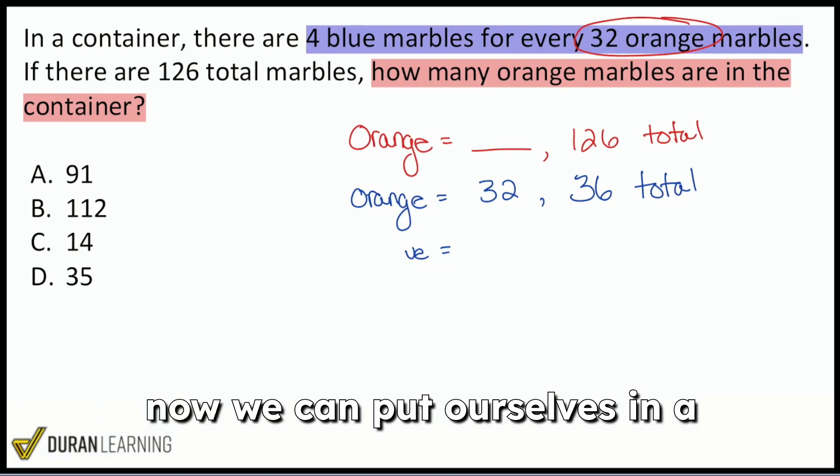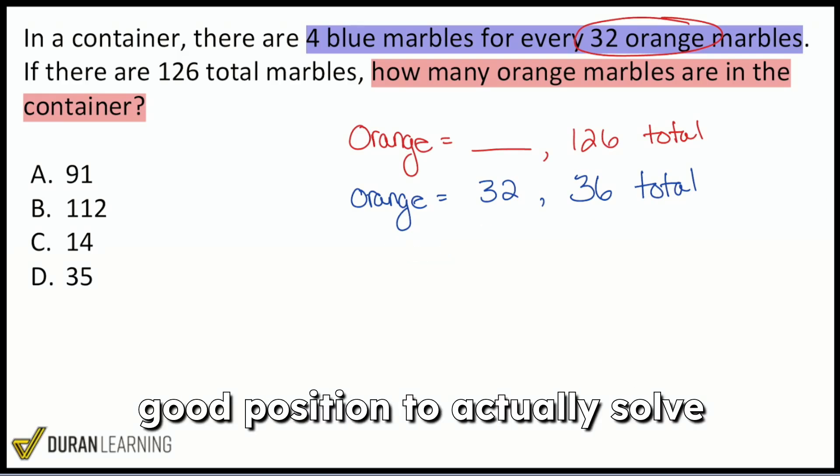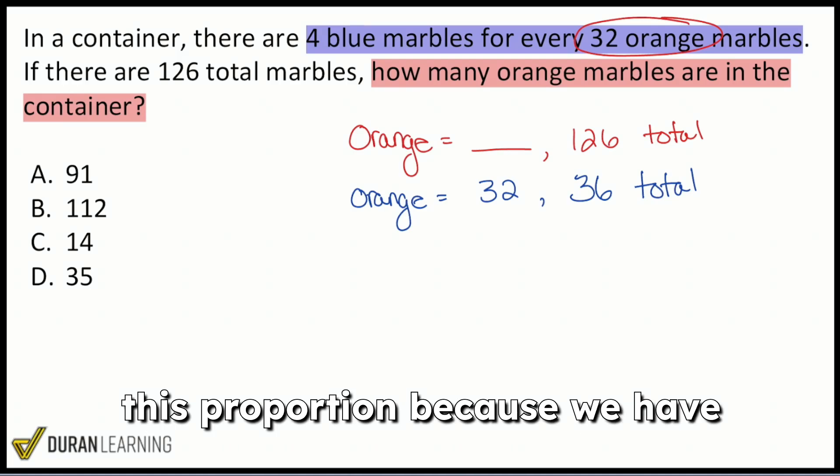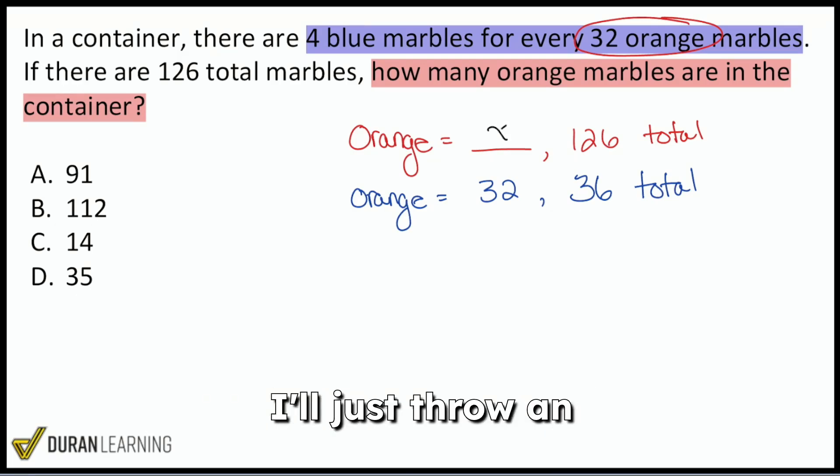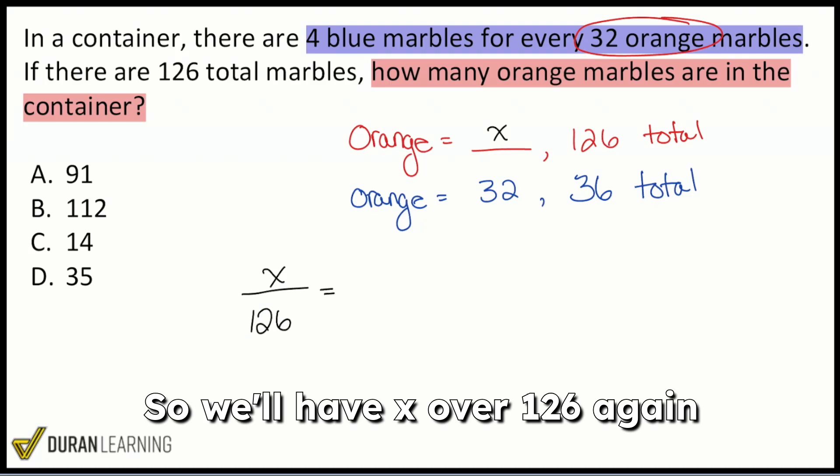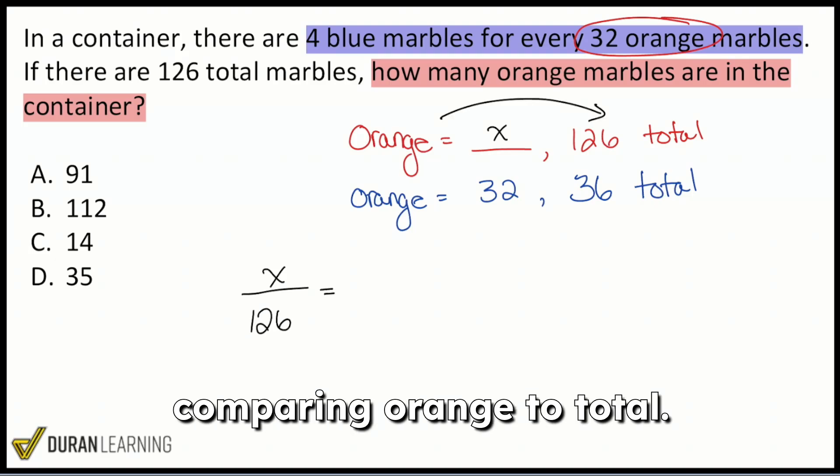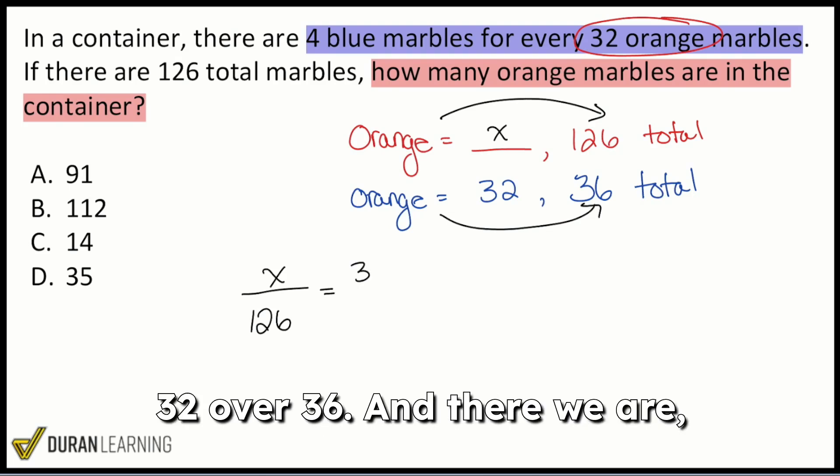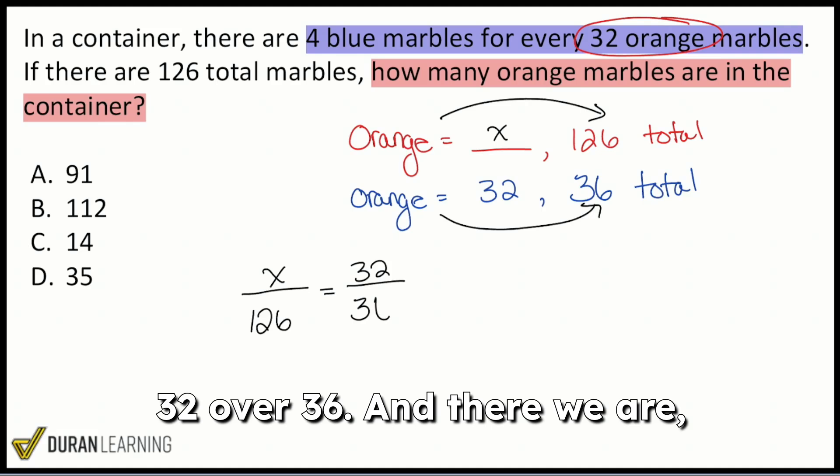So now that we have that, now we can put ourselves in a good position to actually solve this proportion. Because we have compared the same things in the same way. I'll just throw an X right there. And now we can set it up and solve. So we'll have X over 126. Again, comparing orange to total. And then we're going to compare orange to total again. 32 over 36. And there we are.